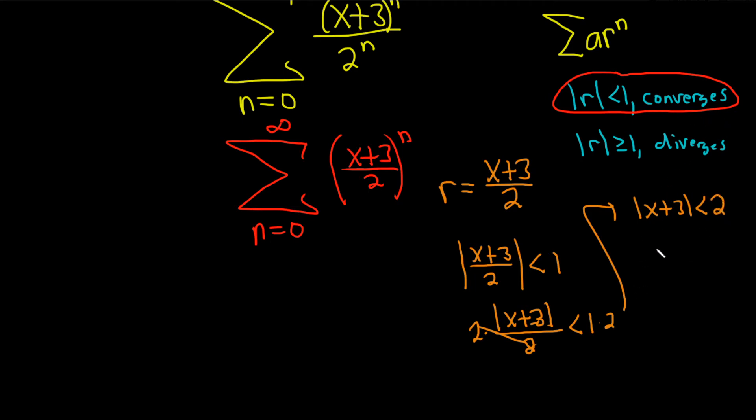Whenever you have an absolute value and a less than, you can drop the absolute value, and you'll get x+3, and here you get a less than 2, and then here you get a negative 2. I just memorized it: less than, less than, less than, positive, negative.